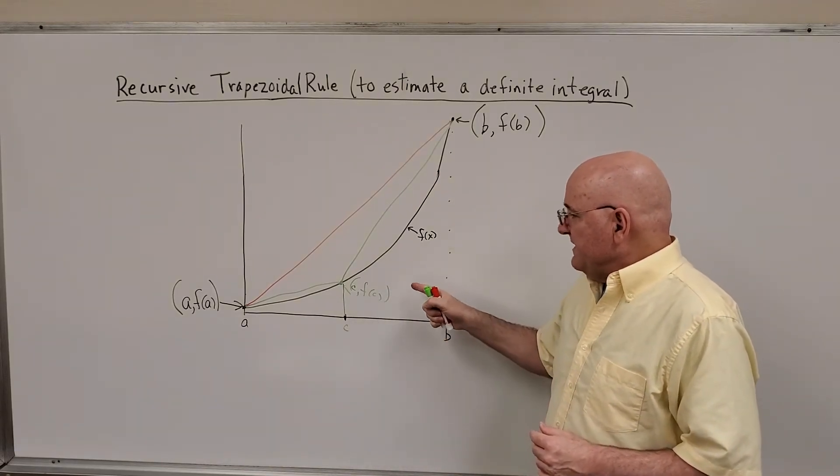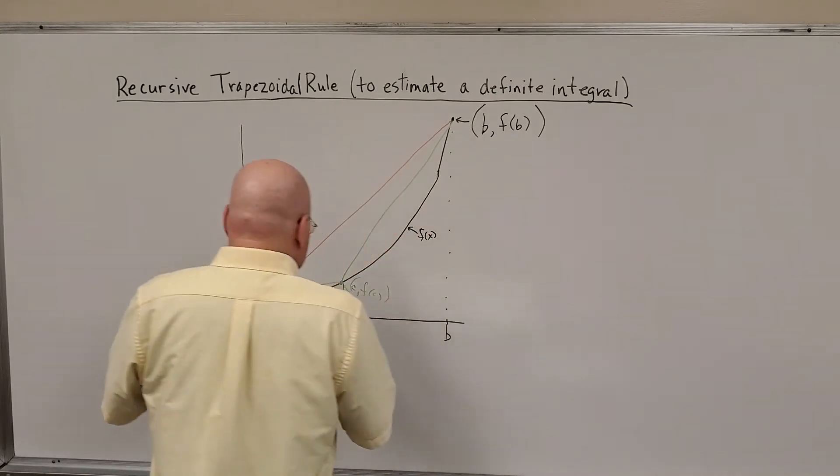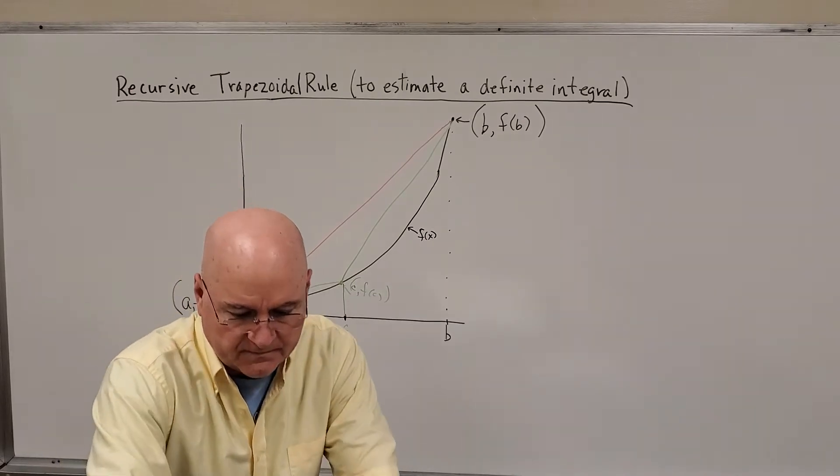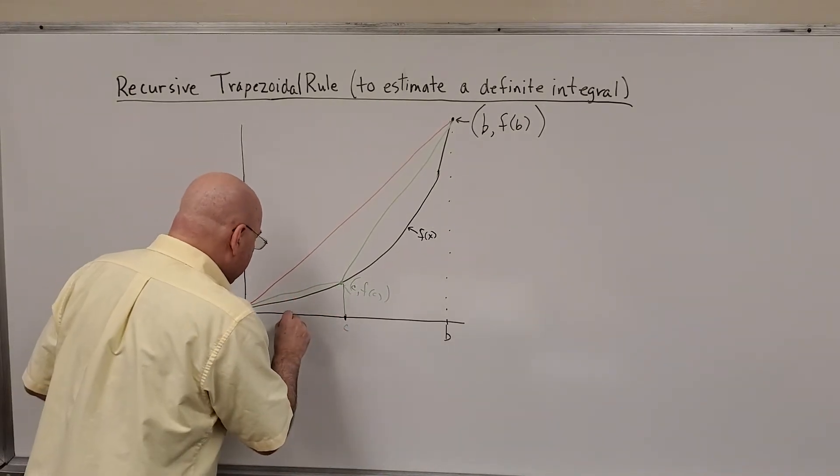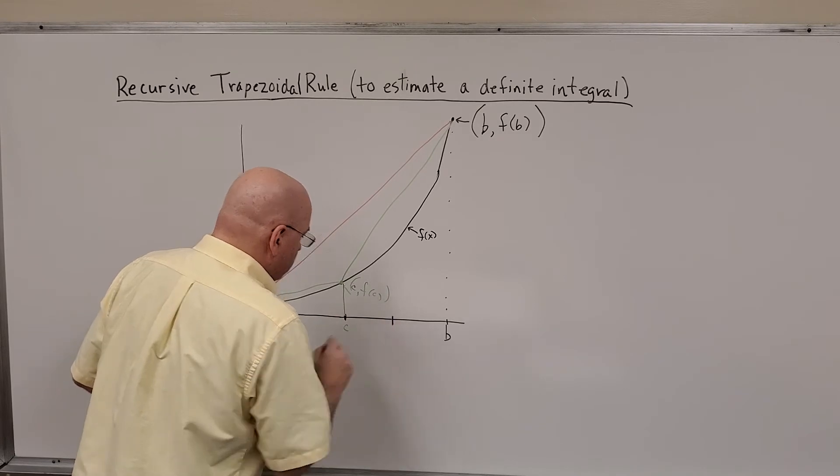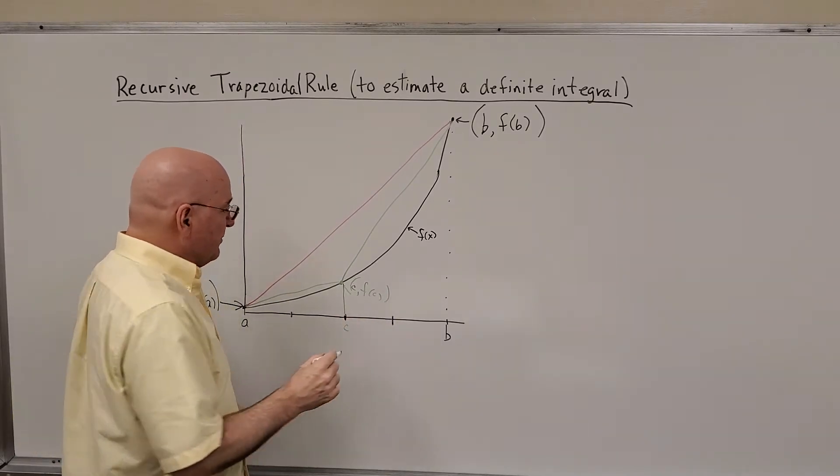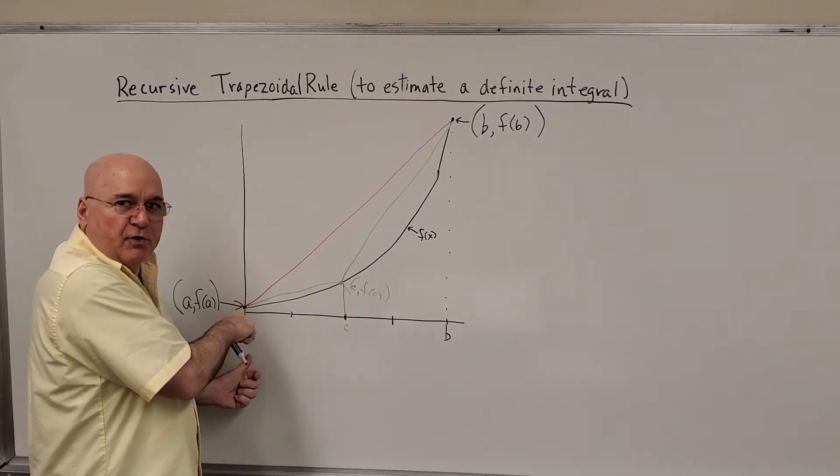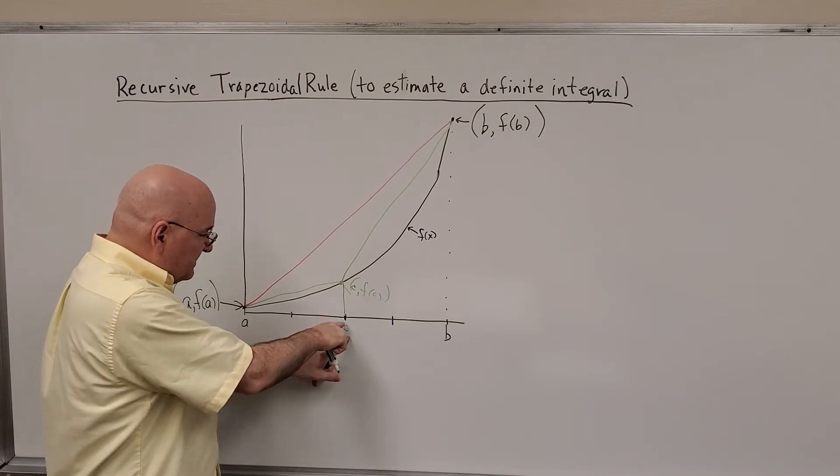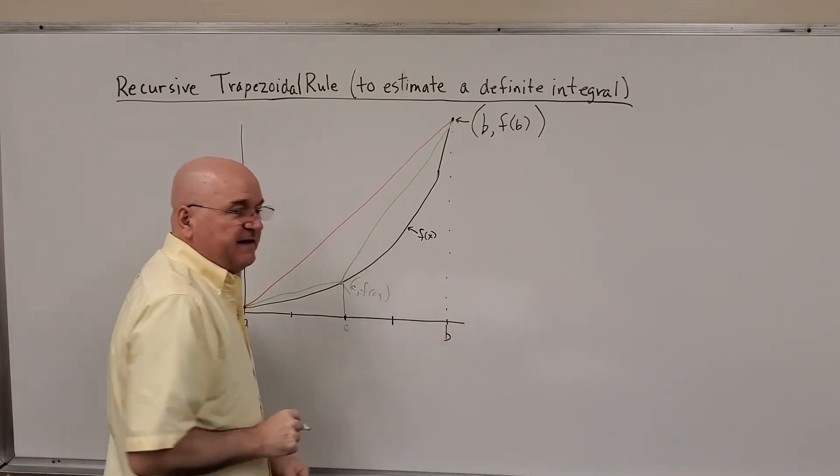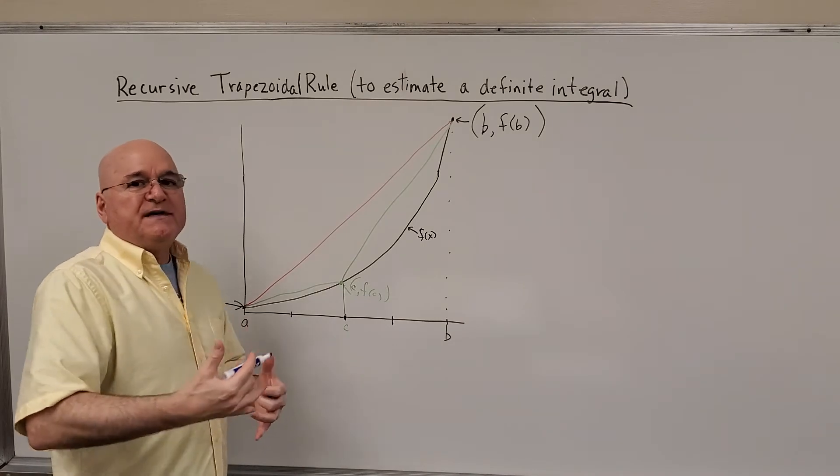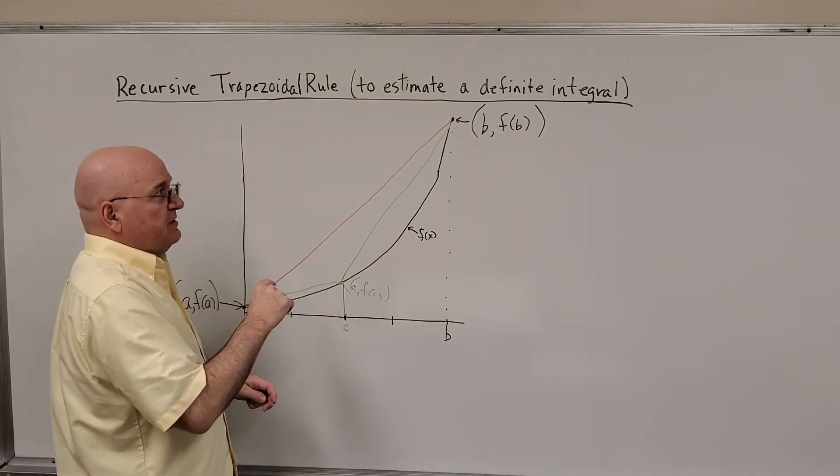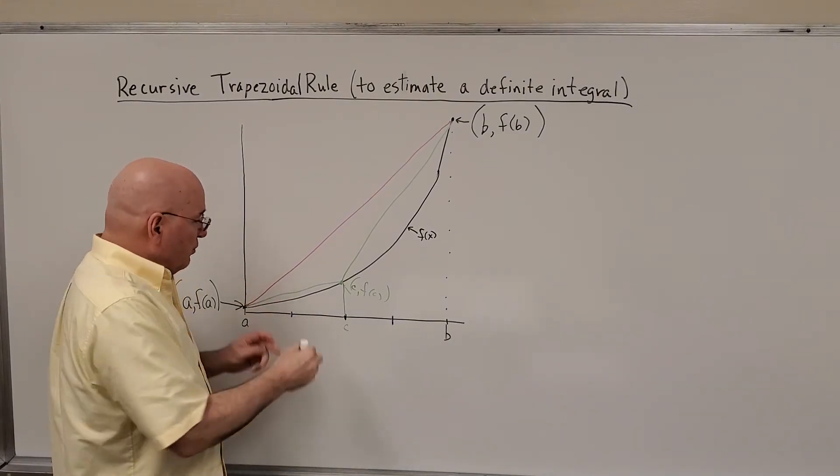What we would do in the next step is go from two trapezoids, we're going to double it, we're going to go to four trapezoids. So now we've got one, two, three, four intervals. And the reason we do that is because we've already processed a before, and this middle point, and b, the other endpoint. Don't redo that every time. We're able to reuse it in the computation of the recursive trapezoidal rule with four intervals.